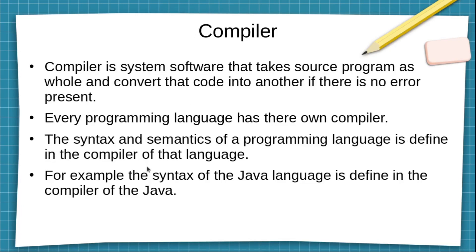A compiler is a system software that takes a source program as a whole and converts that code into another code, if there is no error present in our program. The compiler takes that source code written in the text editor and converts it into another code called machine code — or in the case of Java, it is a bytecode.